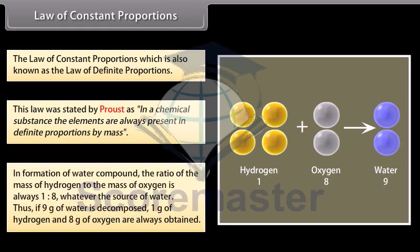In formation of water compound, the ratio of the mass of hydrogen to the mass of oxygen is always 1 is to 8, whatever the source of water. Thus, if 9 gram of water is decomposed, 1 gram of hydrogen and 8 gram of oxygen are always obtained.